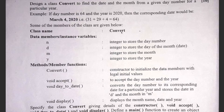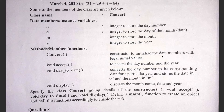The class name is Convert. The private data members are: n — integer to store the day number, d — integer to store the day of the month, m — integer to store the month, and y — integer to store the year. The methods are: a constructor to initialize data members with legal initial values, void accept to accept the day number and the year, void dayToDate to convert the day number to its corresponding date and store the date in d and month in m, and void display to display the month name, day, and year.